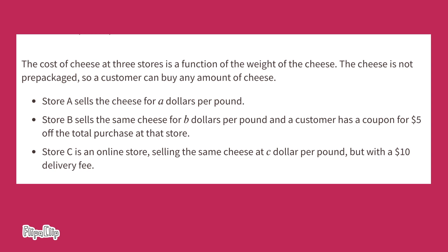Right away I noticed some differences. Store A sells the cheese for A dollars per pound, but Store B sells the same cheese for B dollars per pound and a customer has a coupon for five dollars off the total price at that store. Store C is an online store selling the same cheese at C dollars per pound but with a ten dollar delivery fee tacked on to every order.